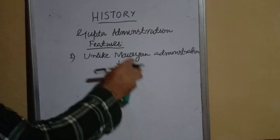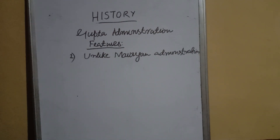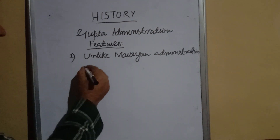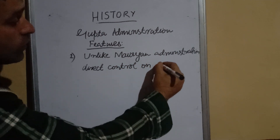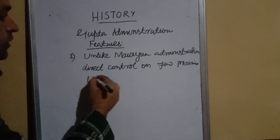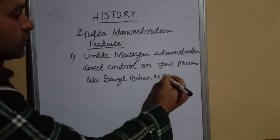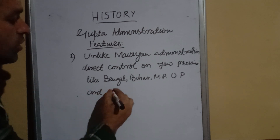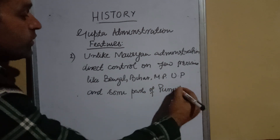Unlike Mauryan administration, Gupta administration had a unique type of administration in that they had direct control over a few provinces — provinces like Bengal, Bihar, Madhya Pradesh, Uttar Pradesh, and some parts of Punjab.